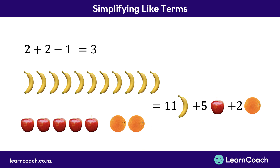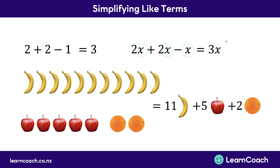But it's not just fruit that you can add together — you can do it with letters as well. For example with x's. If you had 2 x's and someone gave you another 2 x's and then you took one of those x's away, you'd be left with 3 x's. That's what this video is about — making these expressions simpler using what's called like terms, which are things similar to each other, like bananas, apples and x's.